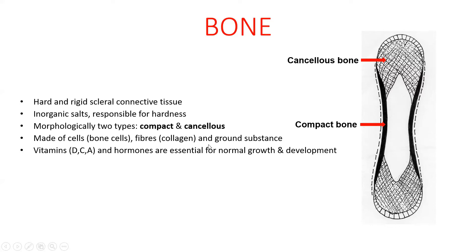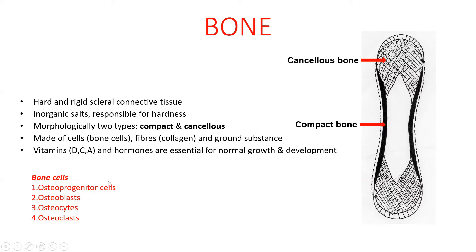The bone cells are osteoprogenitor cells, osteoblasts, osteocytes, and osteoclasts. The fibers are of collagen, around which inorganic salts are deposited to give hardness. And the ground substance is mainly made of chondroitin sulfate and dermatan sulfate.